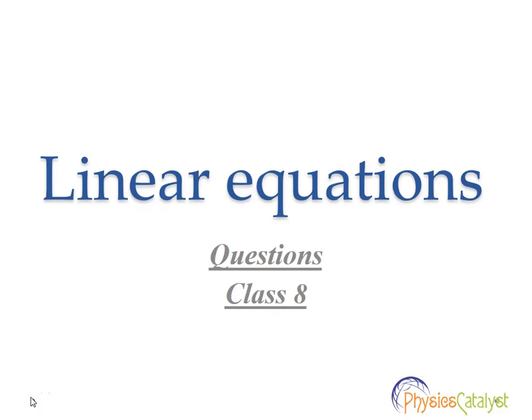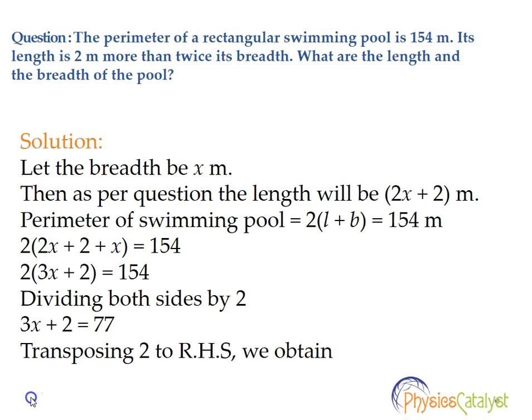Welcome students. This is part 2 in the linear equations series where we look at word problems. The problem statement is: The perimeter of a rectangular swimming pool is 154 meters. Its length is 2 meters more than twice its breadth. What are the length and breadth of the pool? In these types of questions, we first find the unknowns.